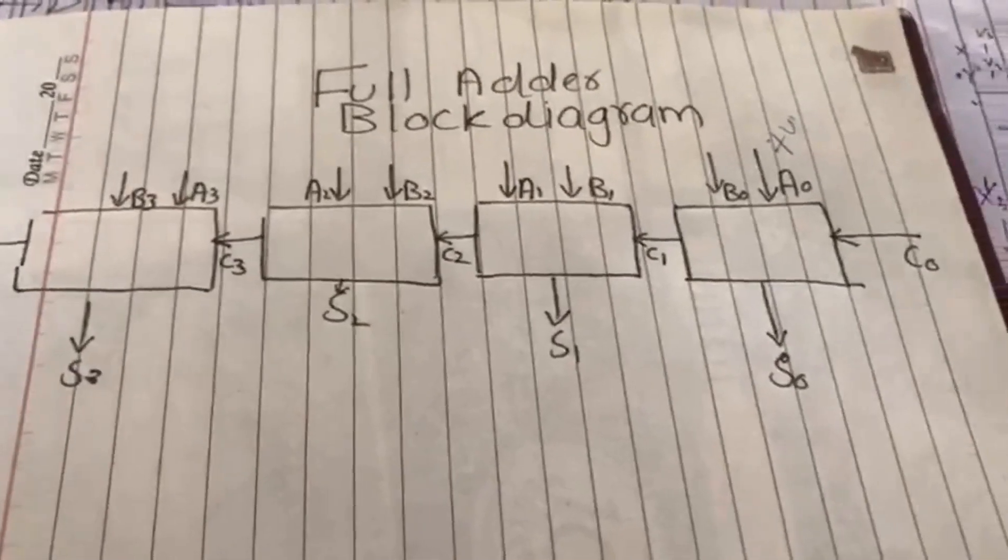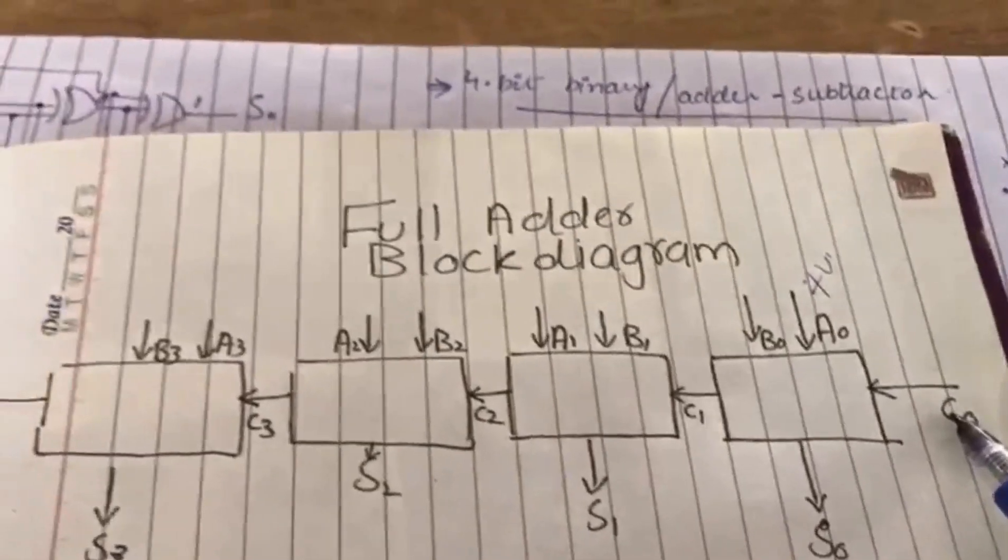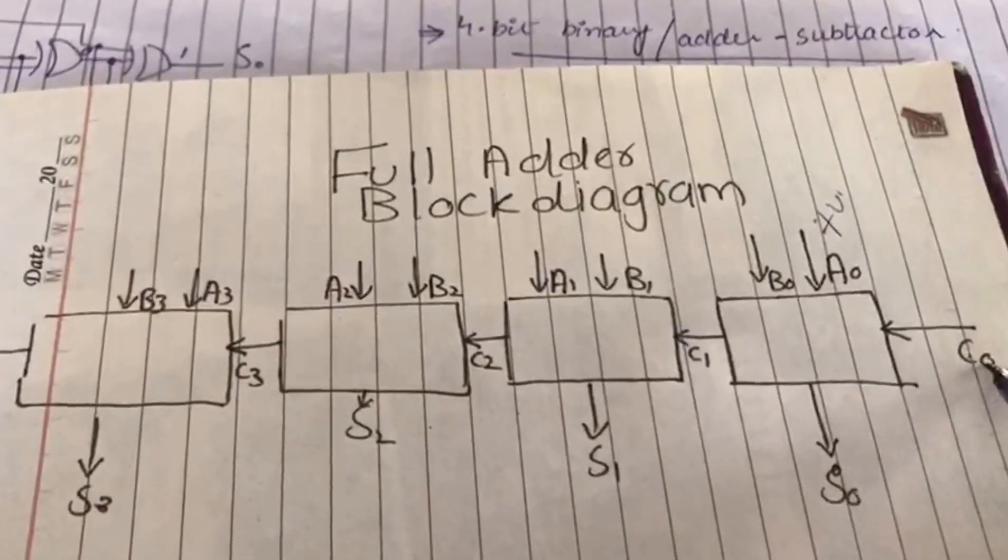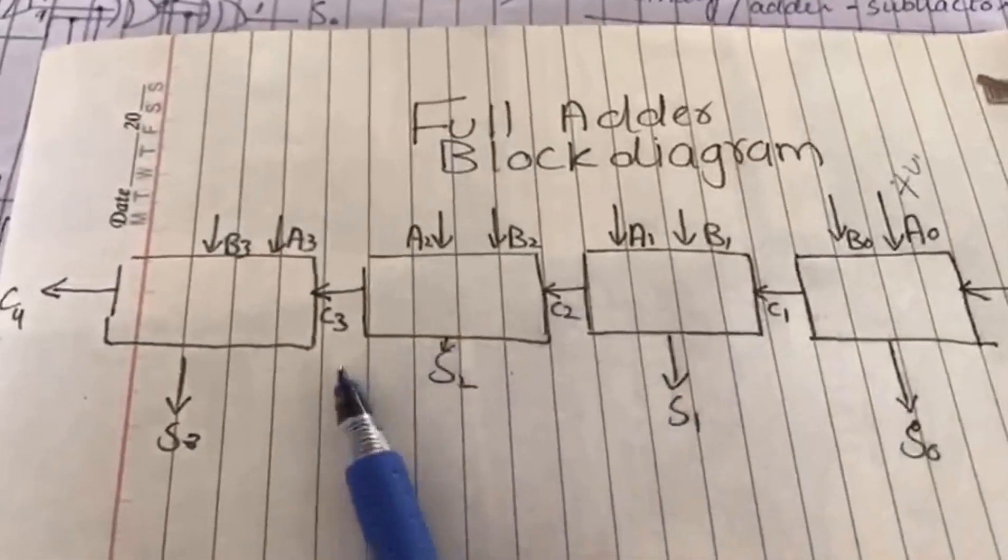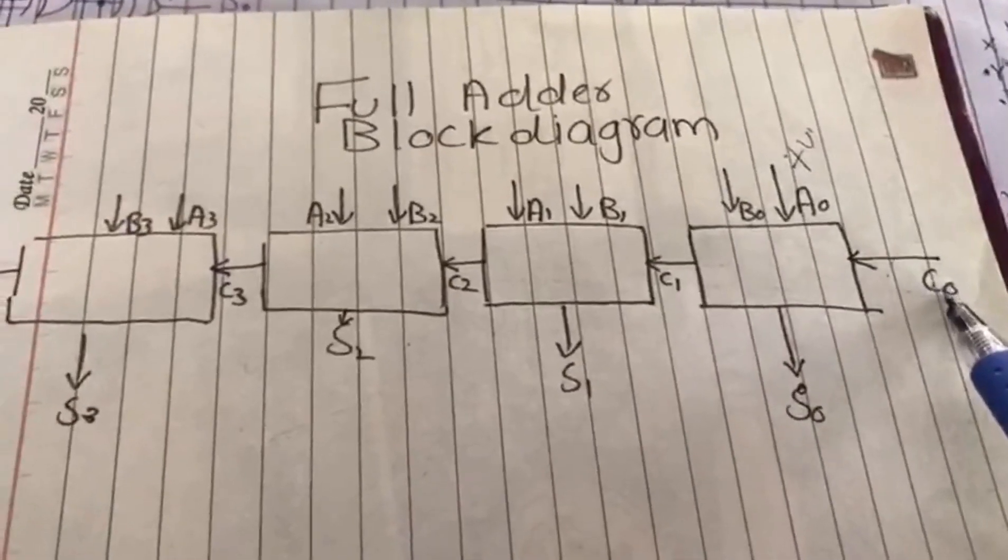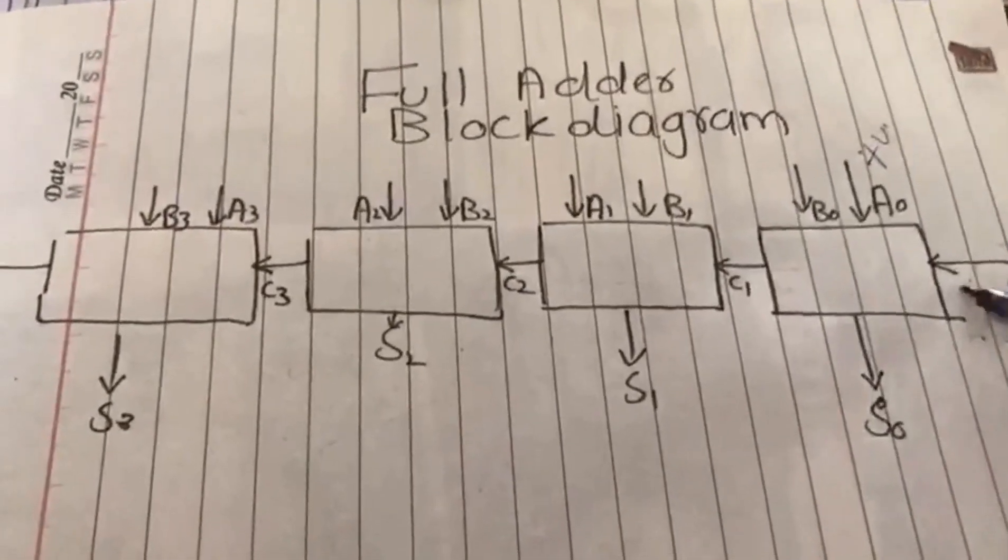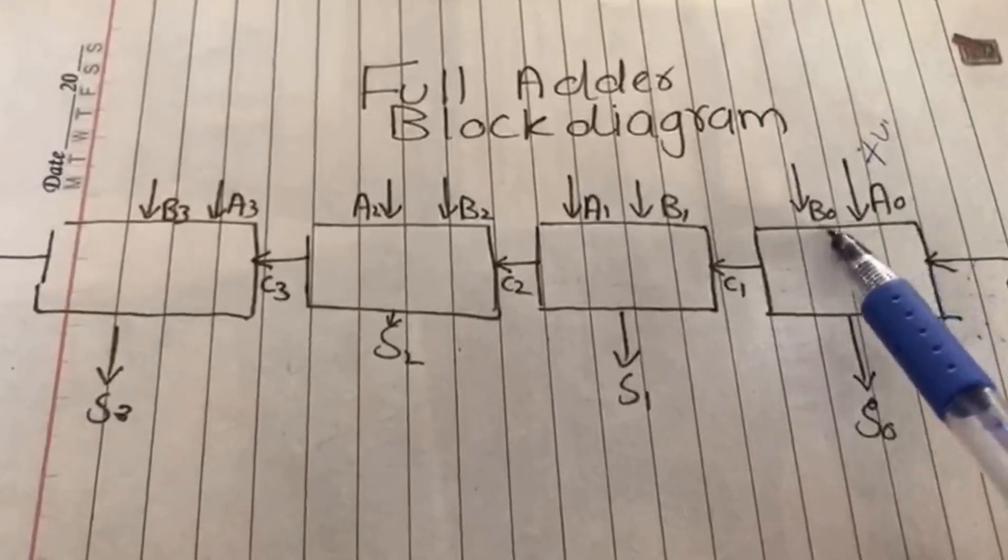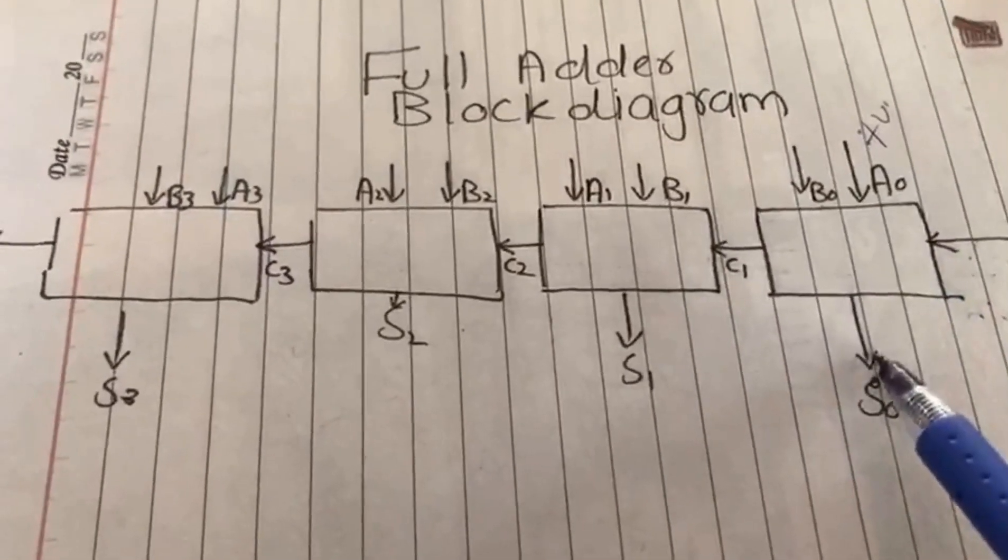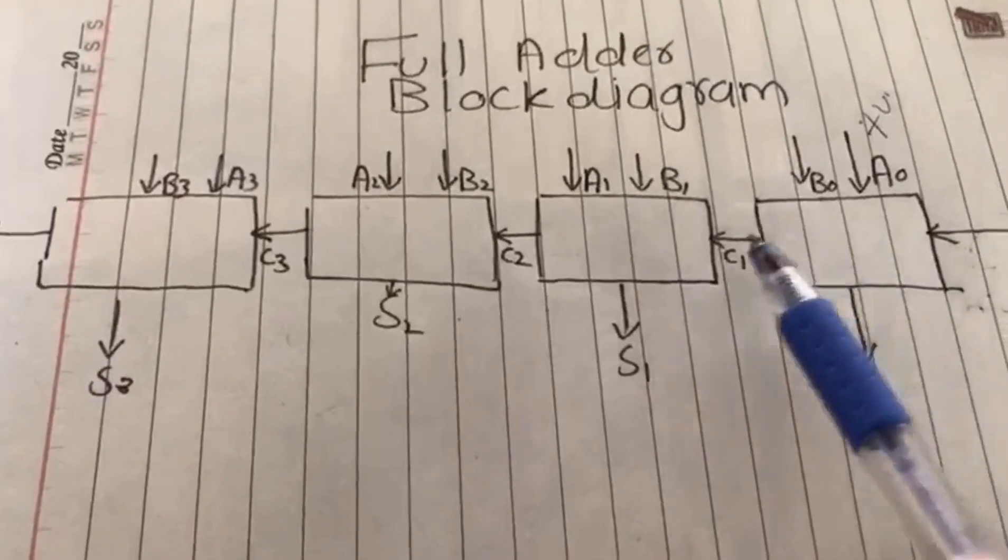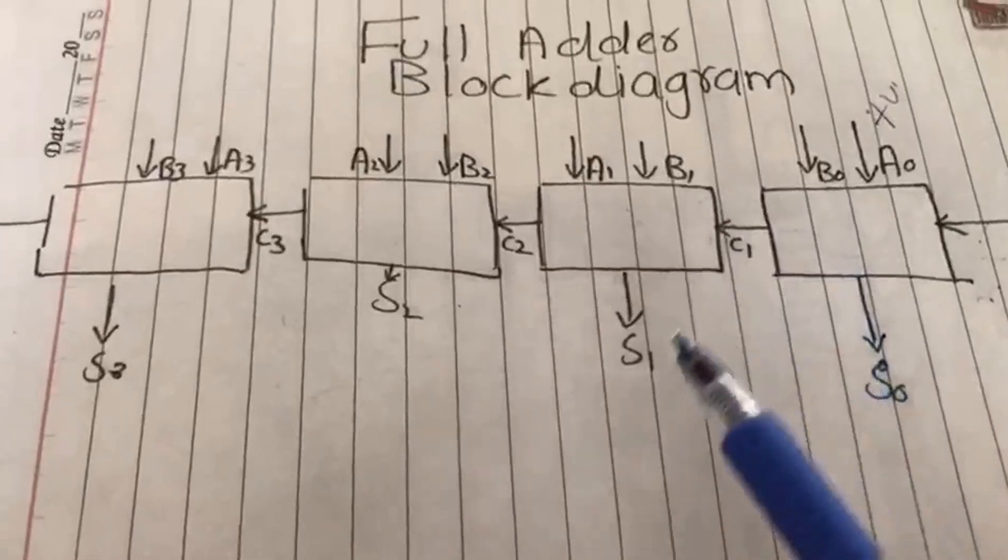Now we will draw the block diagram. First, C in is the carry in. If we are doing addition, C in is 0. After this, we will add A0 and B0. Then the sum will be S0. If a carry is generated, the carry will go out further. This will be added to A1, B1, and C1, and this will be S1.